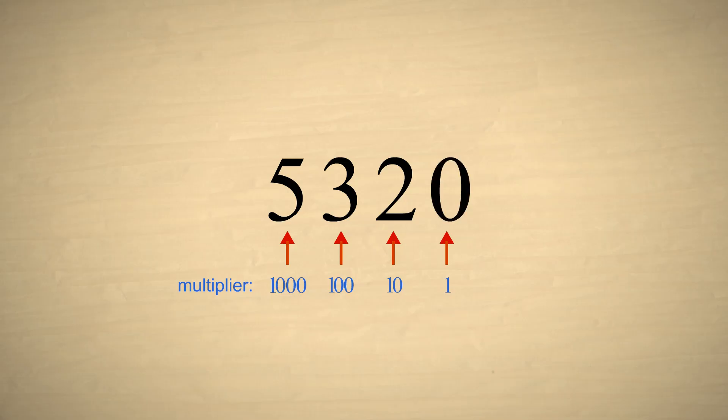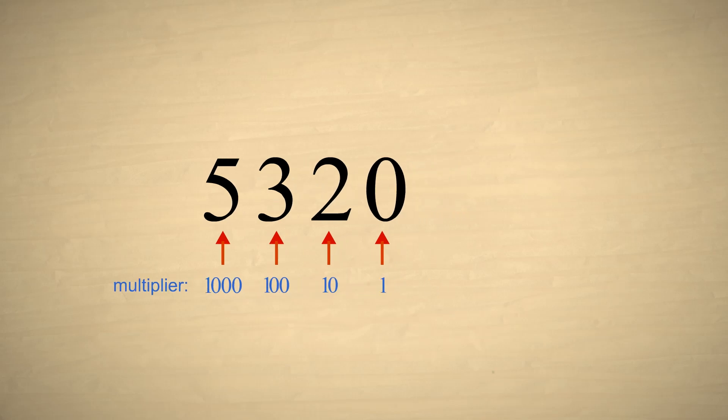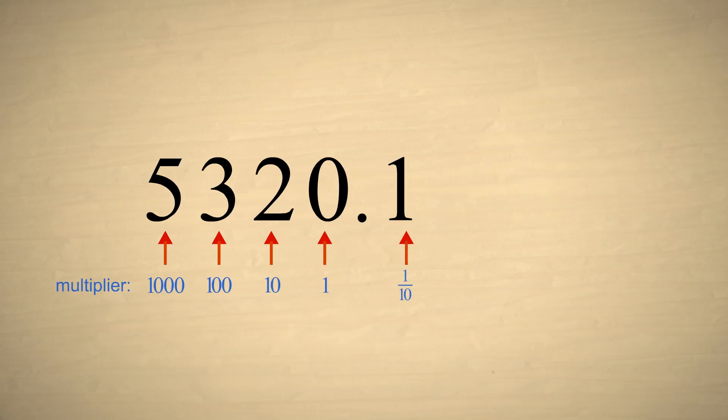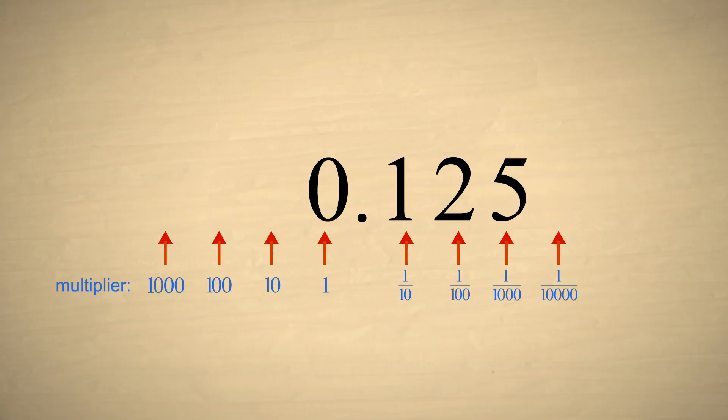We have increased the value of each digit by a factor of ten. This is also true when there are digits to the right of the decimal point. For example, the decimal equivalent to the fraction one-eighth is 0.125.